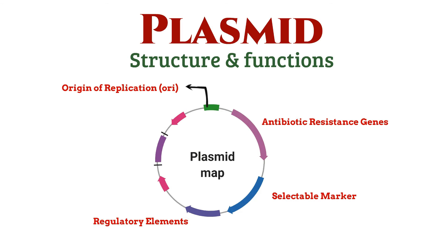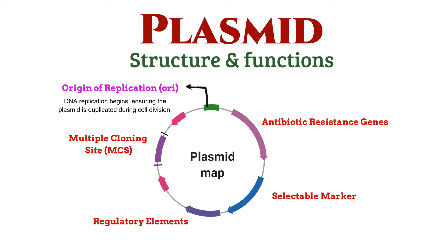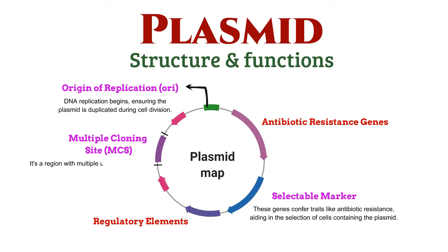Plasmid consists of the following components. Origin of replication is where DNA replication begins, ensuring the plasmid is duplicated during cell division. Selectable markers are the genes that confer traits like antibiotic resistance, aiding in selecting cells containing the plasmid. Multiple cloning site, or polylinker, is a region with multiple unique restriction enzyme recognition sites, allowing the insertion of foreign DNA fragments.